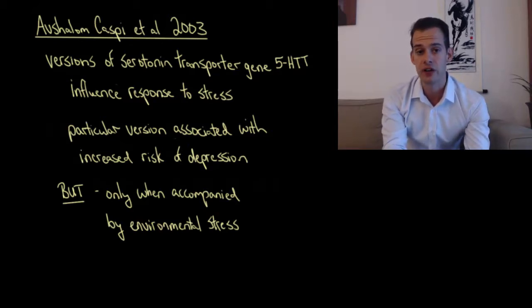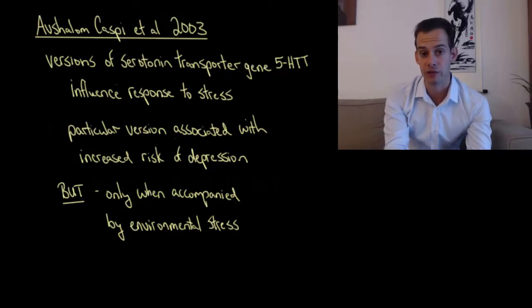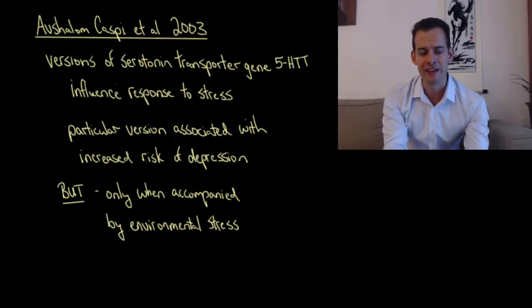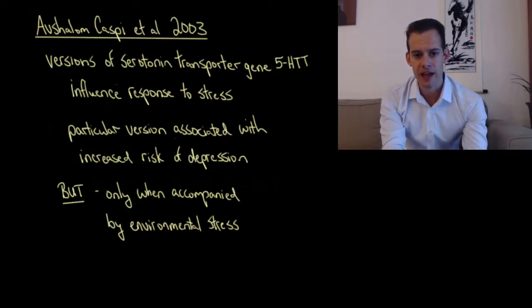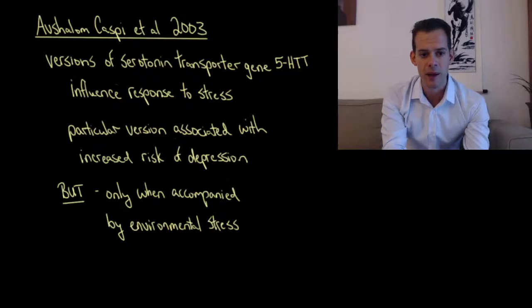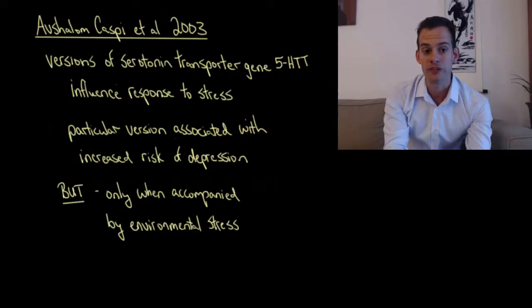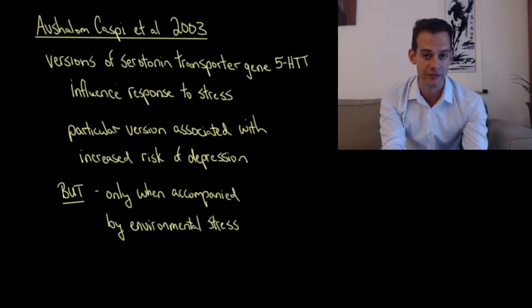You can have two long alleles, you can have one short and one long allele, or you can have two short alleles for this particular gene associated with this serotonin transporter. What they found was that if people had the short allele, this was associated with an increased risk of diagnosis of depression and with depressive symptoms. But it was only associated with this increased risk when the short allele was accompanied by stressful life events.